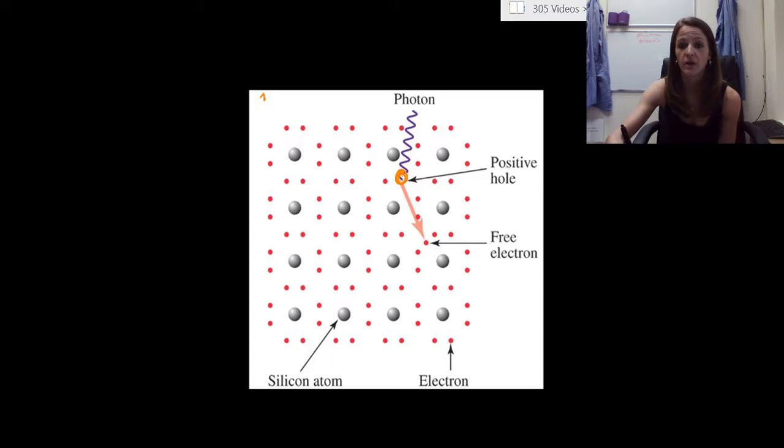and then the electron moves. So it travels along this line, and now all of a sudden you have this free electron.